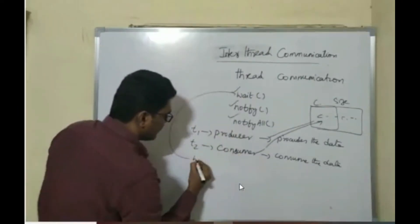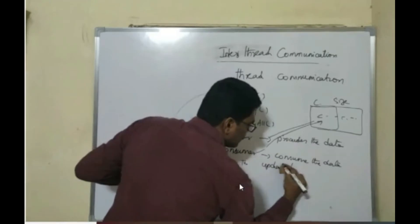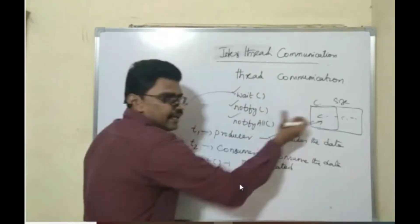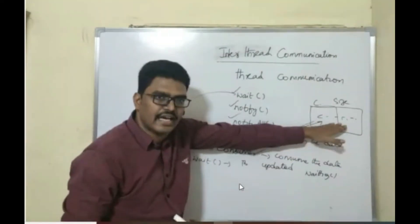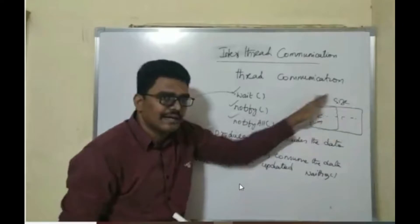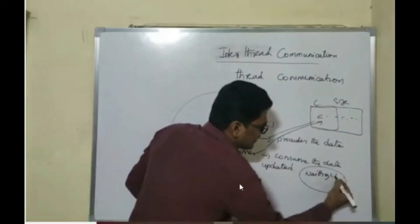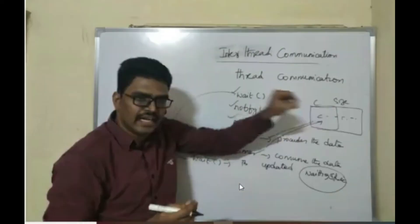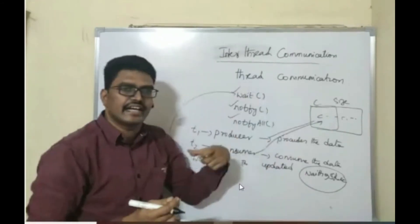The wait method is called by a thread which needs updated data. A thread that wants updated data has to call the wait method and it will go into the waiting state, because the data is not yet updated — the producer has not produced the data. So the consumer will call the wait method and go into the waiting state. That is the purpose of the wait method: it is used by a thread that wants updated data. Whenever it calls wait, it goes into the waiting state until it gets the updated data.